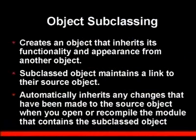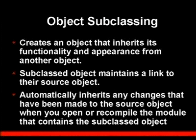Object subclassing is the most important topic in this lecture. This is a way to create an object that inherits its functionality and appearance from another object. Subclassing objects maintain a link to their source object and automatically inherit any changes made to the source object. Whenever you open or recompile the form module that contains the subclass object, it will change its properties to match those of the object it is subclassed from.